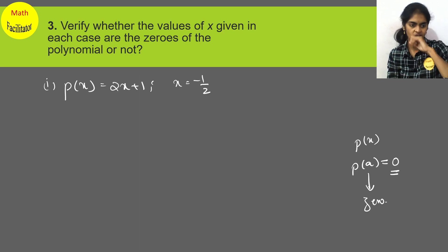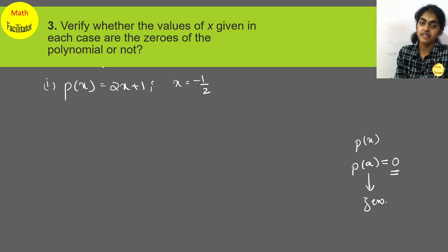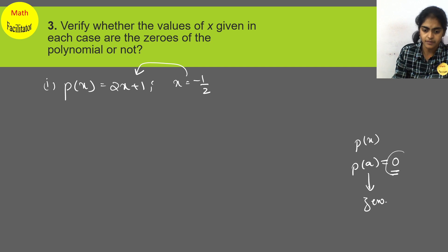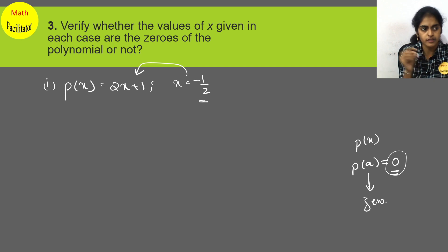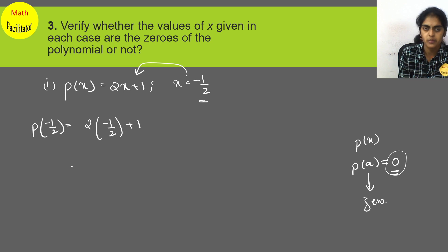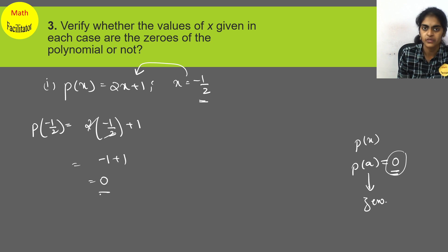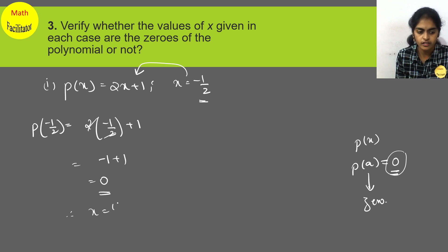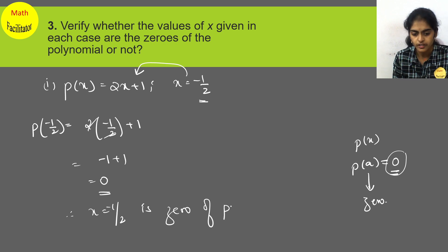When you substitute a value in place of x and the final answer is 0, that value is called a zero of the polynomial. For p(x) = 2x + 1, substituting x = −1/2: p(−1/2) = 2 into (−1/2) plus 1. The 2s cancel, giving −1 plus 1 equals 0. So the final answer is 0. Therefore, −1/2 is a zero of the polynomial.